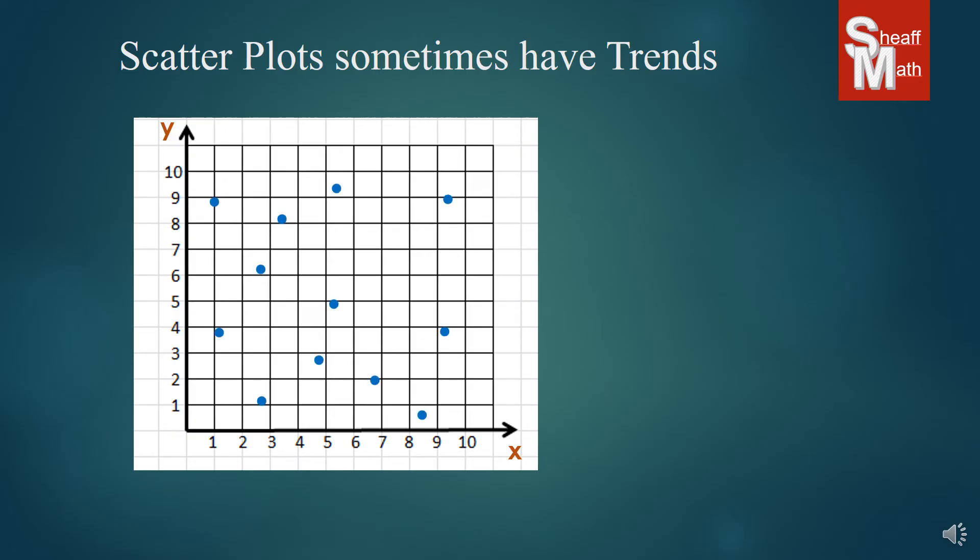And the last trend or non-trend is this. This is a scatterplot that seems to have no particular trend at all. This is just a random set of data. And so this is technically called no trend. There's no visible pattern to them.